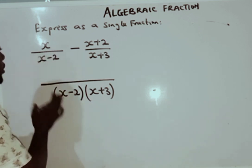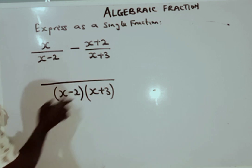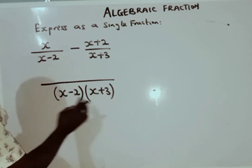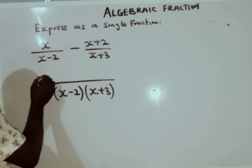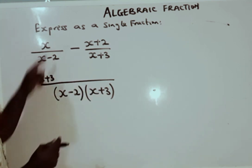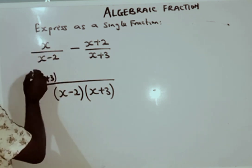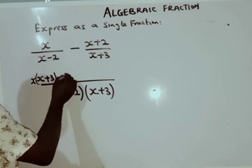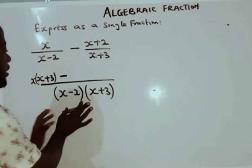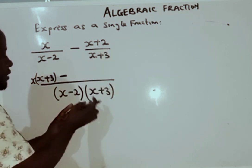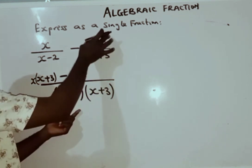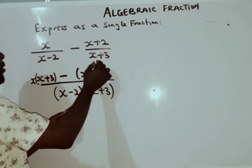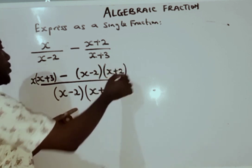The next step is to use the LCM to divide each denominator. If you divide the LCM by the first denominator, those terms cancel and you are left with (x plus 3) multiplied by the numerator. For the second fraction, dividing the LCM cancels to leave (x minus 2), which we multiply by (x plus 2).